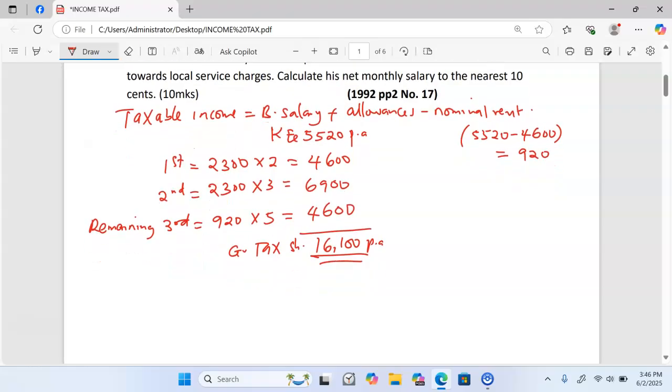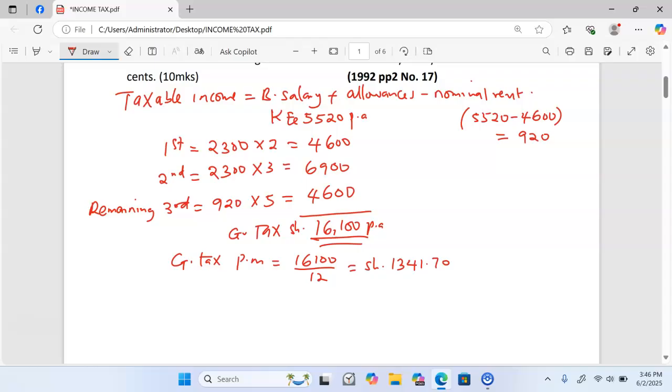We need to calculate gross tax per month. Taking the gross tax per annum of 16,100 and dividing by 12 gives us 1,341.70 shillings, correct to the nearest cents.